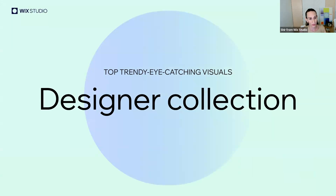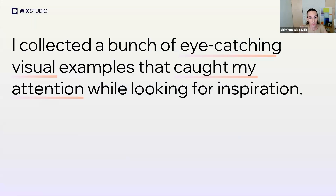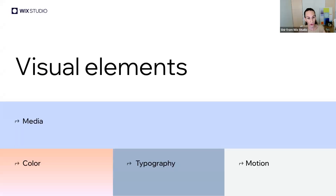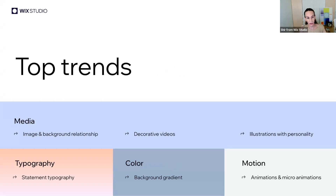I collected a bunch of eye-catching visual examples that caught my attention while looking for inspiration. I split them into four categories based on fundamental website visuals: media, color, typography, and motion. Under media, we'll cover three trends — image and background relationship, decorative videos, and illustrations with personality. We'll also cover statement typography, background gradients, and animation and micro-animations.